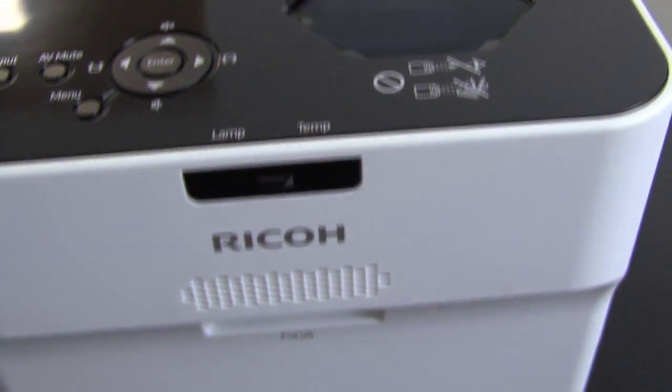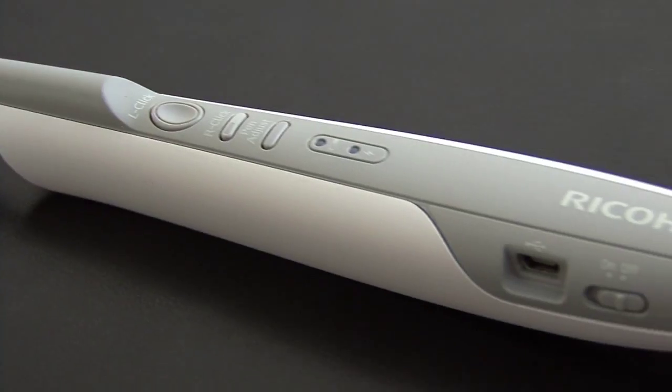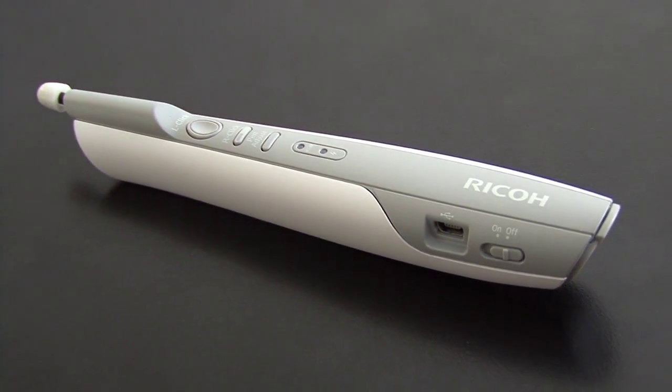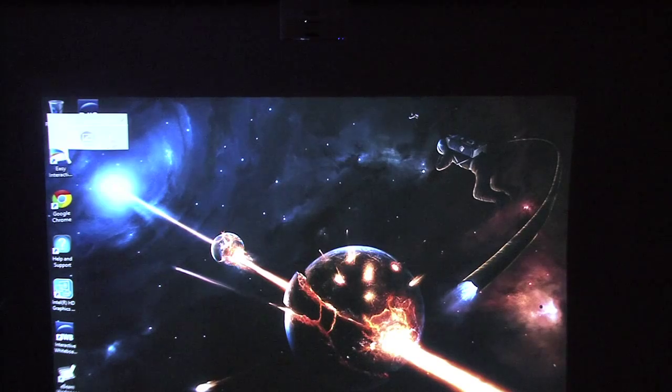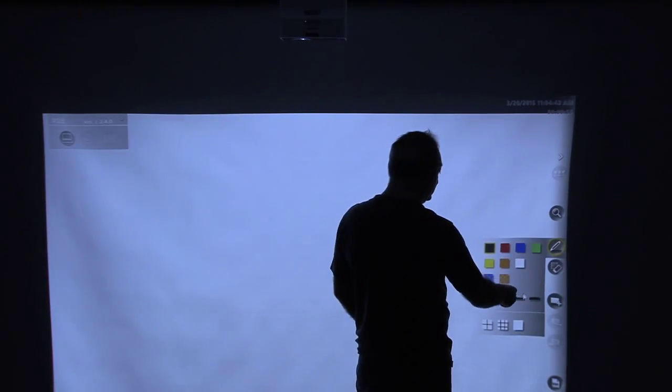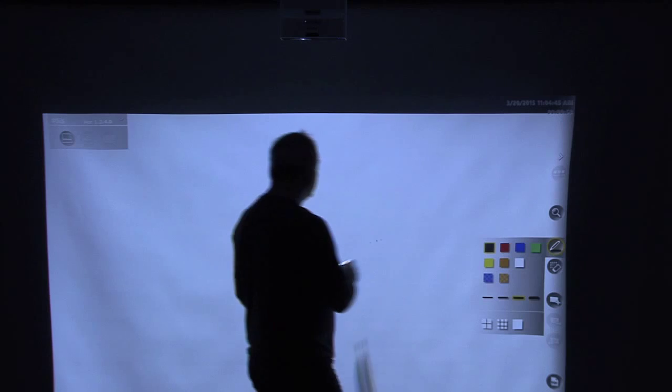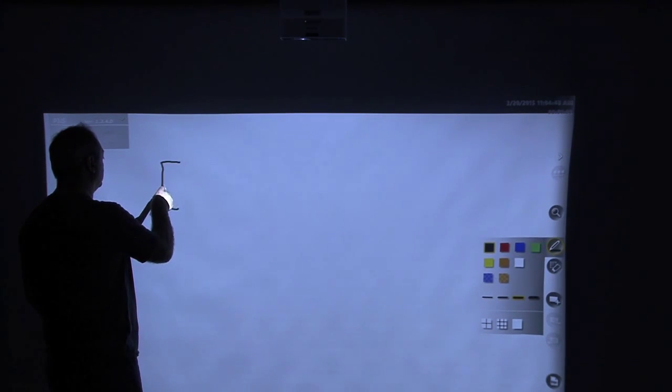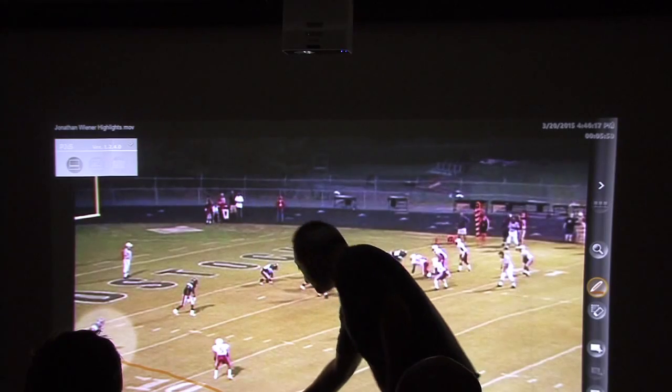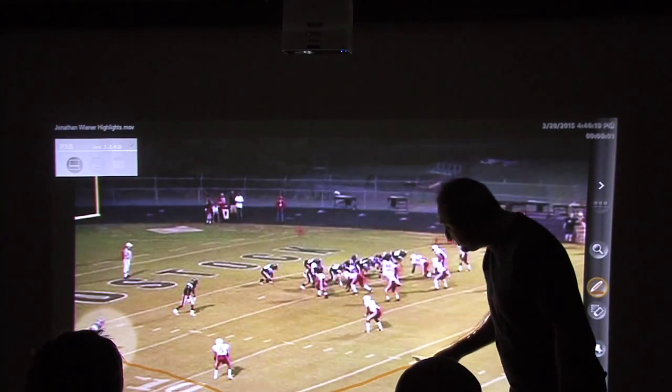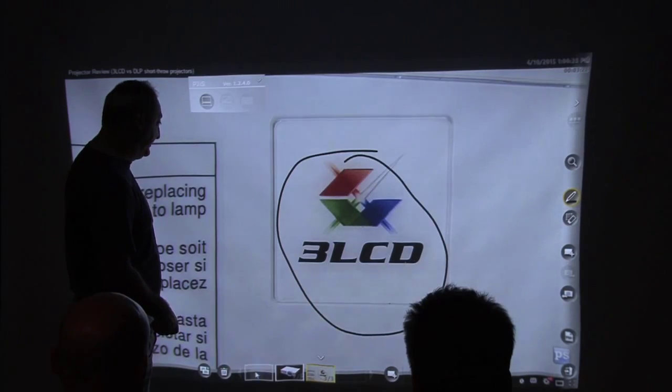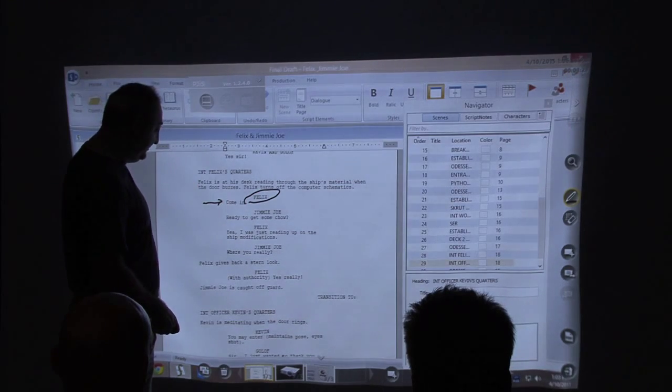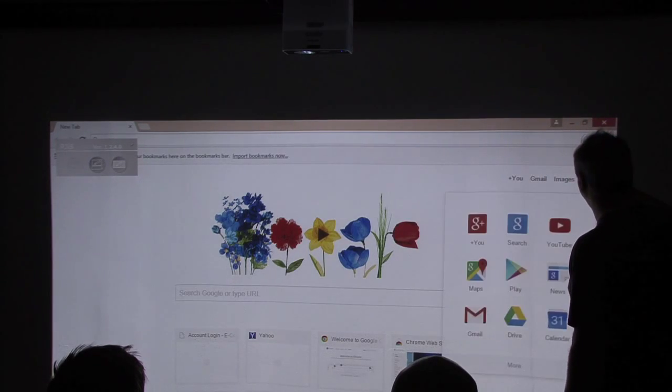Ricoh's WX4141NI projector ships with one interactive pen and requires a connected PC to activate the interactive functions. Ricoh also includes annotation software, and like the Epson, it allows for annotation on a virtual whiteboard using basic drawing tools, as well as the ability to annotate over your desktop, save or recall annotated pages, and share and collaborate.